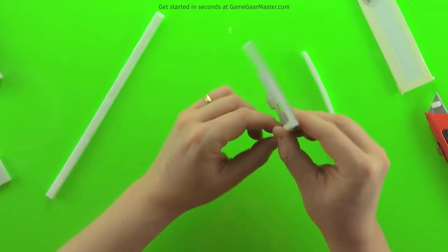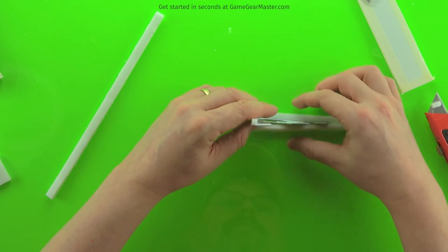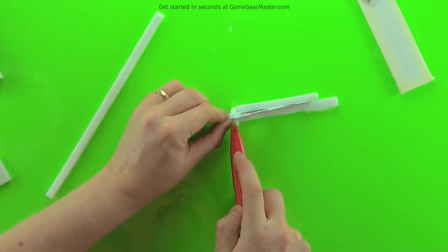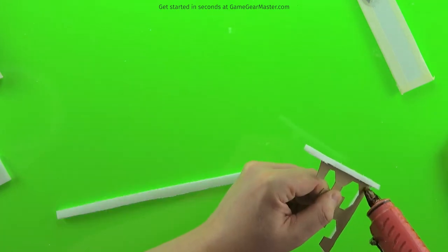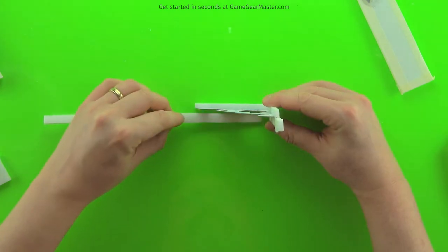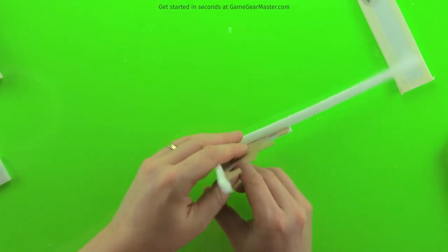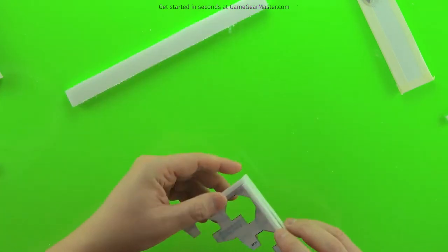Then we're going to take our two-sheet-thick strip of foam board and glue that to the bottom. All right. So now we've got our single-sheet-thick strips on top and our double-sheet-thick strips on the bottom.